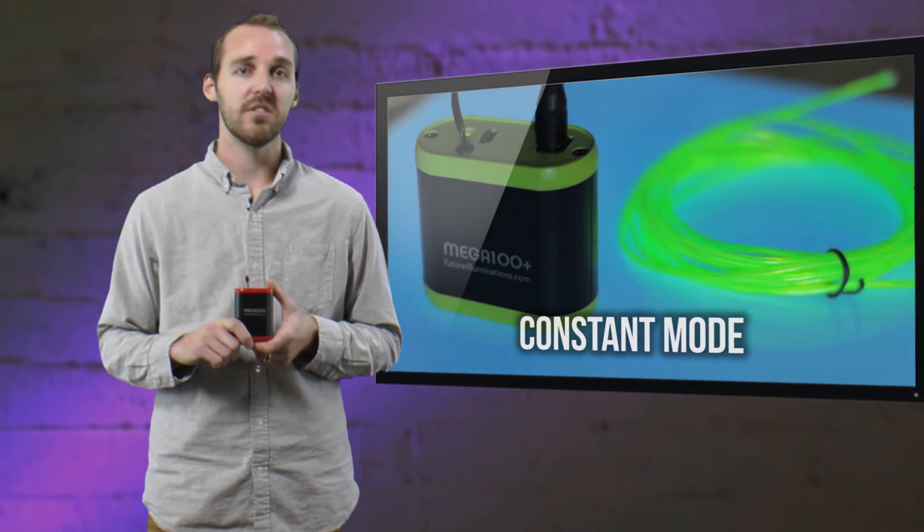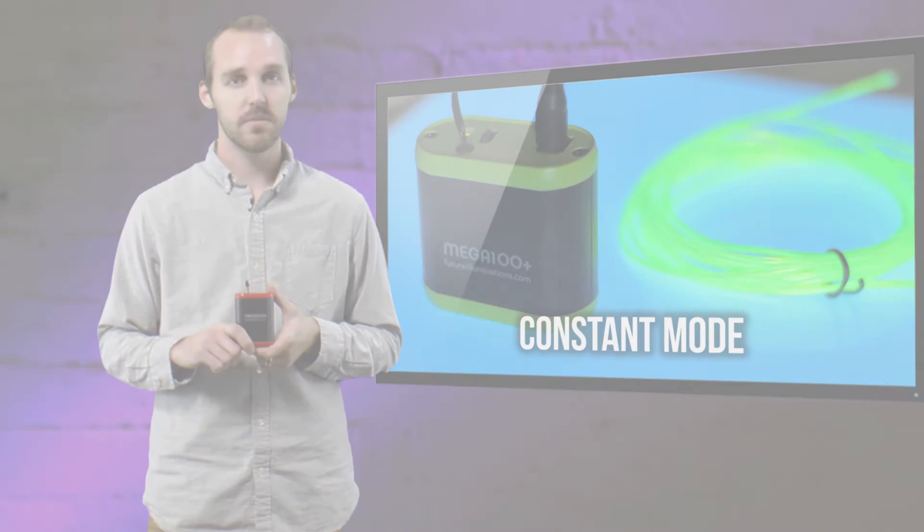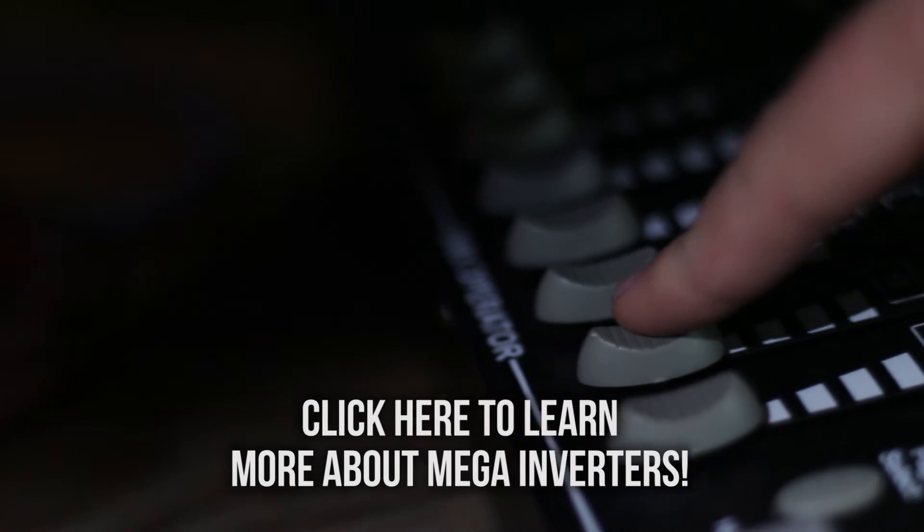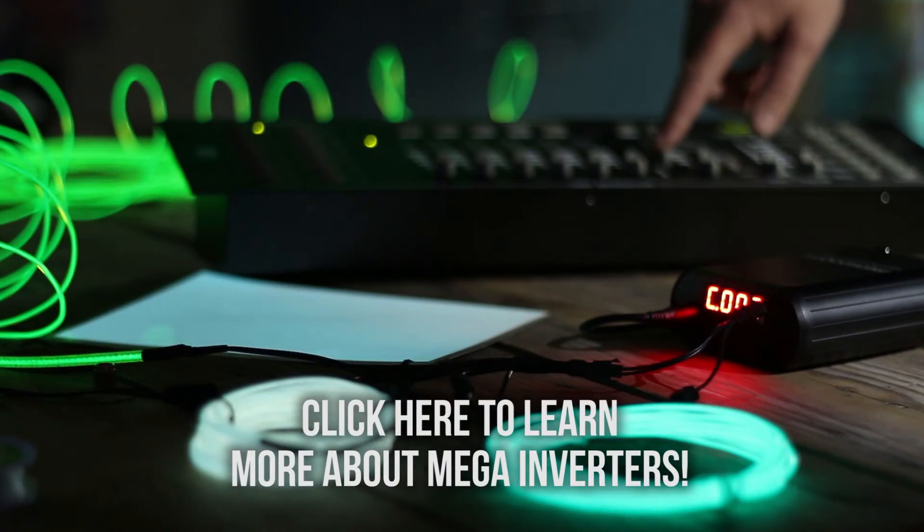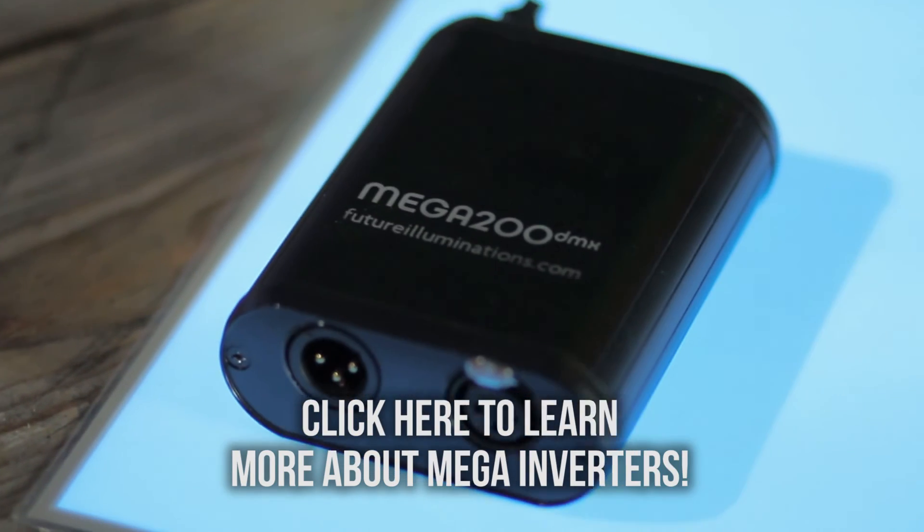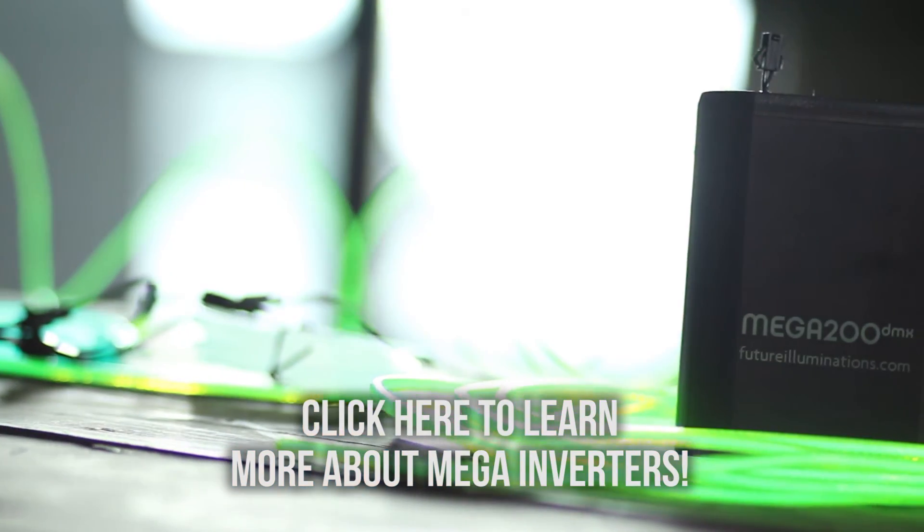And the Mega 200 provides double the power of the 100 Plus. The Mega 200 DMX is the first EL inverter capable of running on any DMX 512 universe. This makes it great for stage performances, events, and nightclubs, and allows any EL technology including EL wire, tape, and panels to run in these environments.